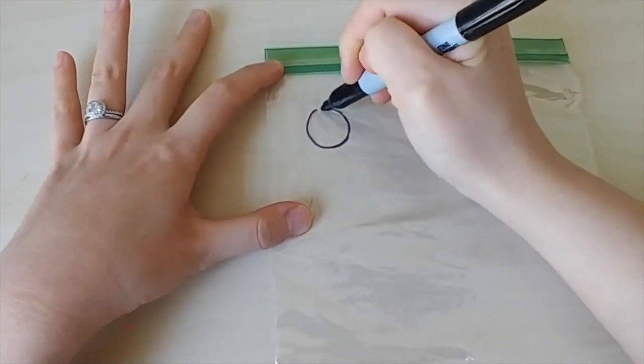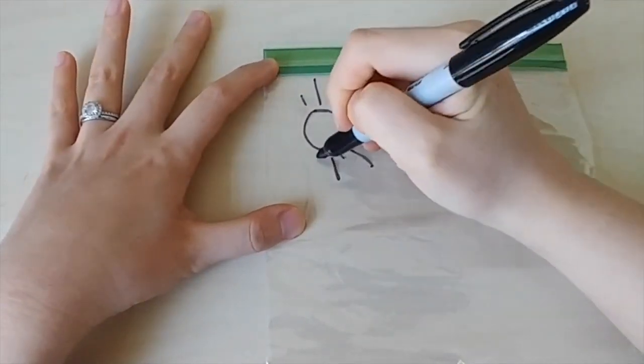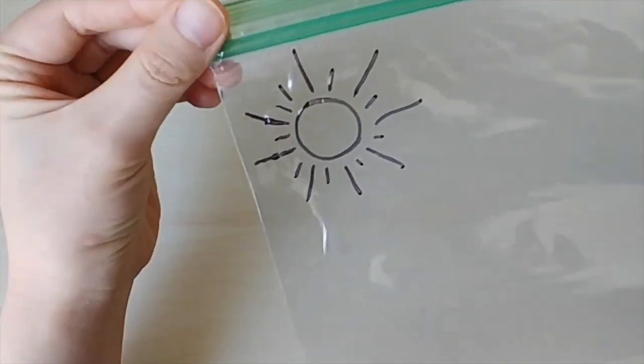First draw a sun at the top left corner like this, alternating long and short lines around a circle.